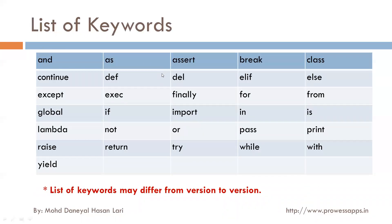Here is the list of keywords which are available in Python. This list can vary from version to version — it is not fixed. When you use the latest version of Python, the list may vary.